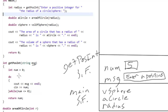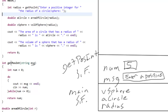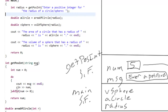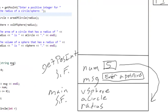Notice that while executing in getPosInt, v_sphere, a_circle, and radius are out of scope. Even though they exist on the call stack and have life, you are not able to reference those variables. If we're in some other stack frame, any variables declared in other stack frames are inaccessible to us. The last thing getPosInt does is return the value of 5. As soon as that function finishes executing and returns 5, all of its stack frame gets popped off the stack.